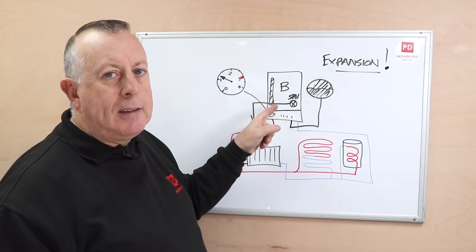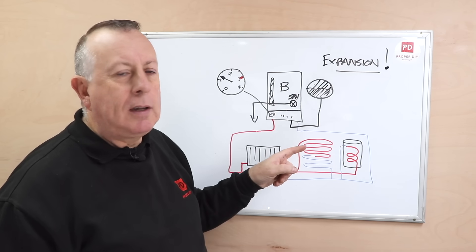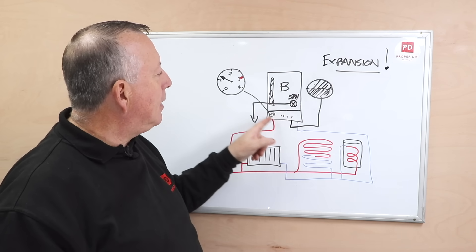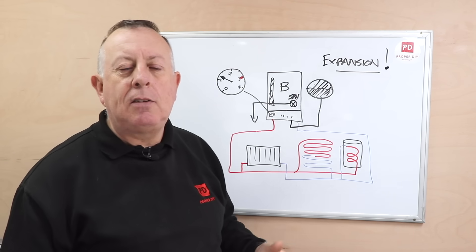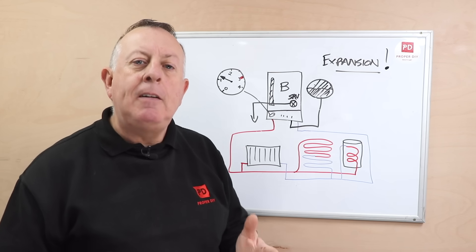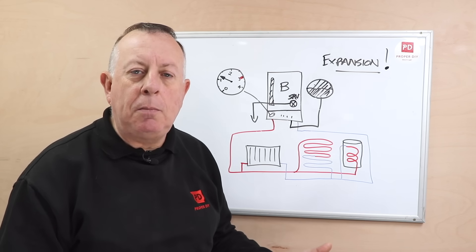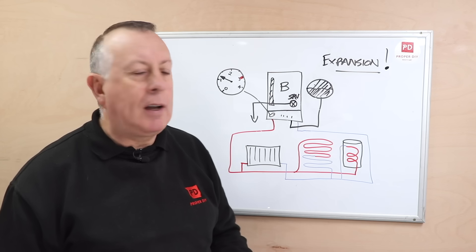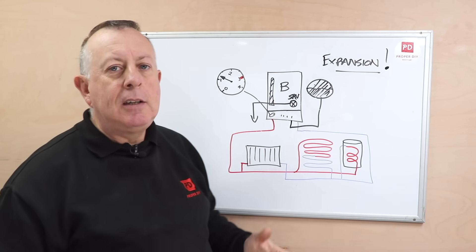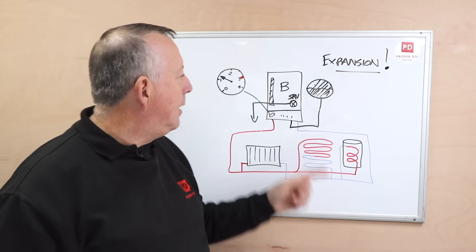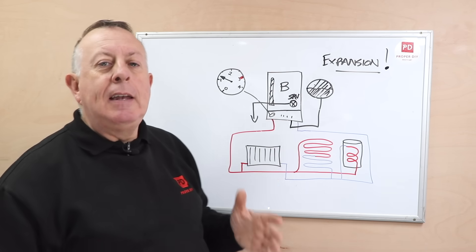However, if the expansion tank within your boiler has gone, then you as a DIYer can't do anything about that. Anything within this boiler you need to be a gas safe engineer. It's a bit like working on your consumer unit - you really need a qualified electrician. Anything within this boiler you need a qualified plumber to carry out any work.